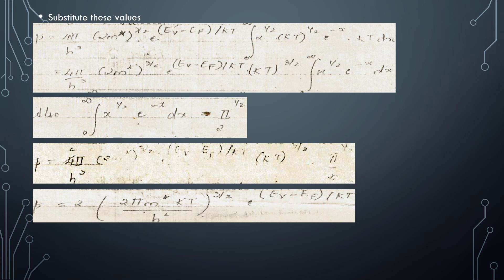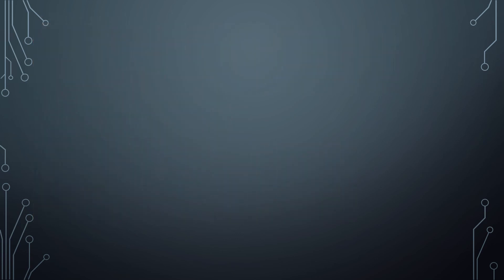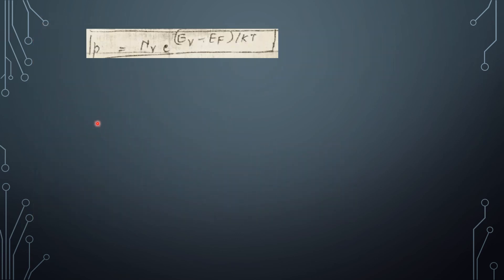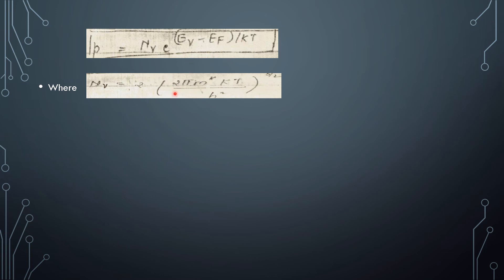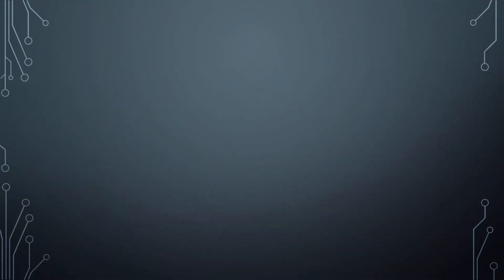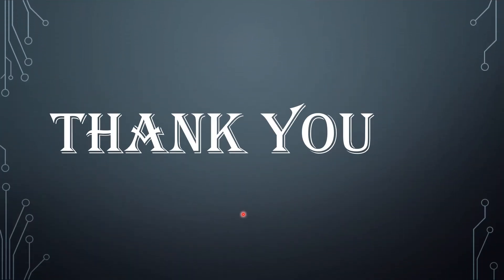This final equation gives the concentration of holes in the valence band. Substituting for the constant as NV, we write p = NV · e^((EV - EF)/KT), where NV = 2 · (2πm*KT / h²)^(3/2). Thank you for watching my video.